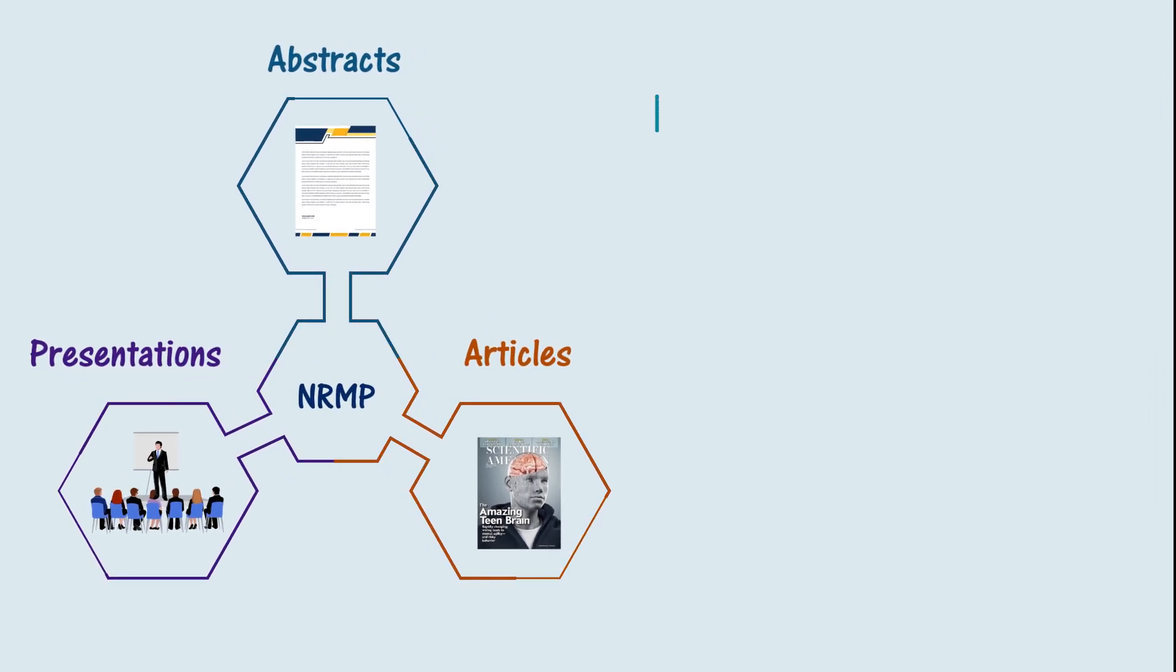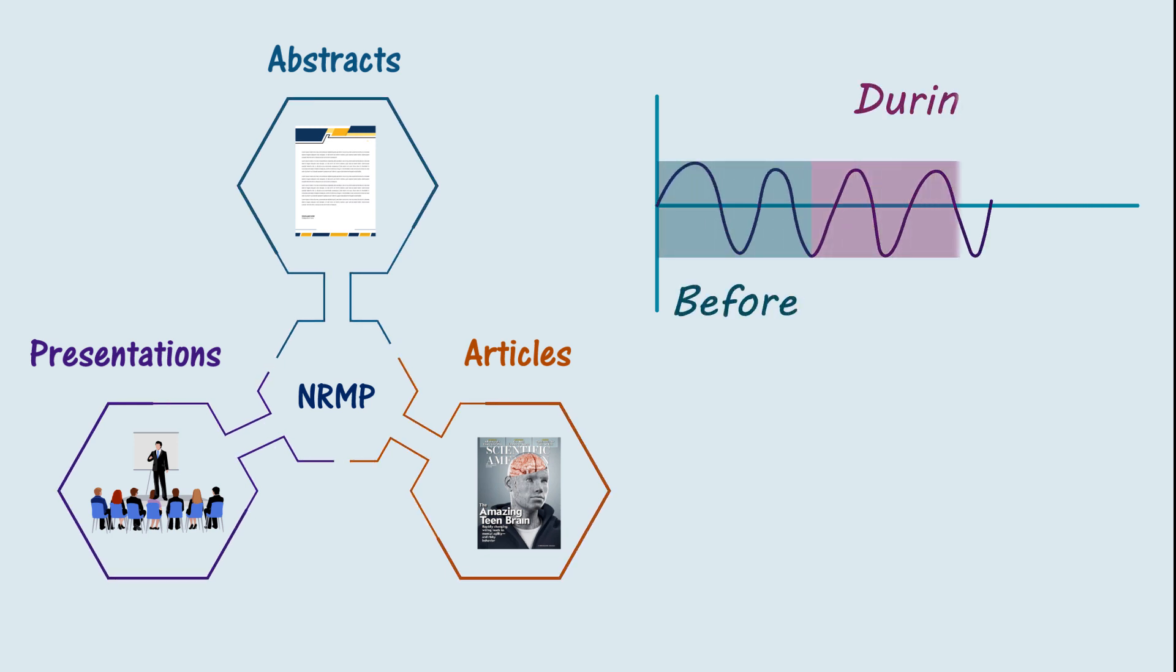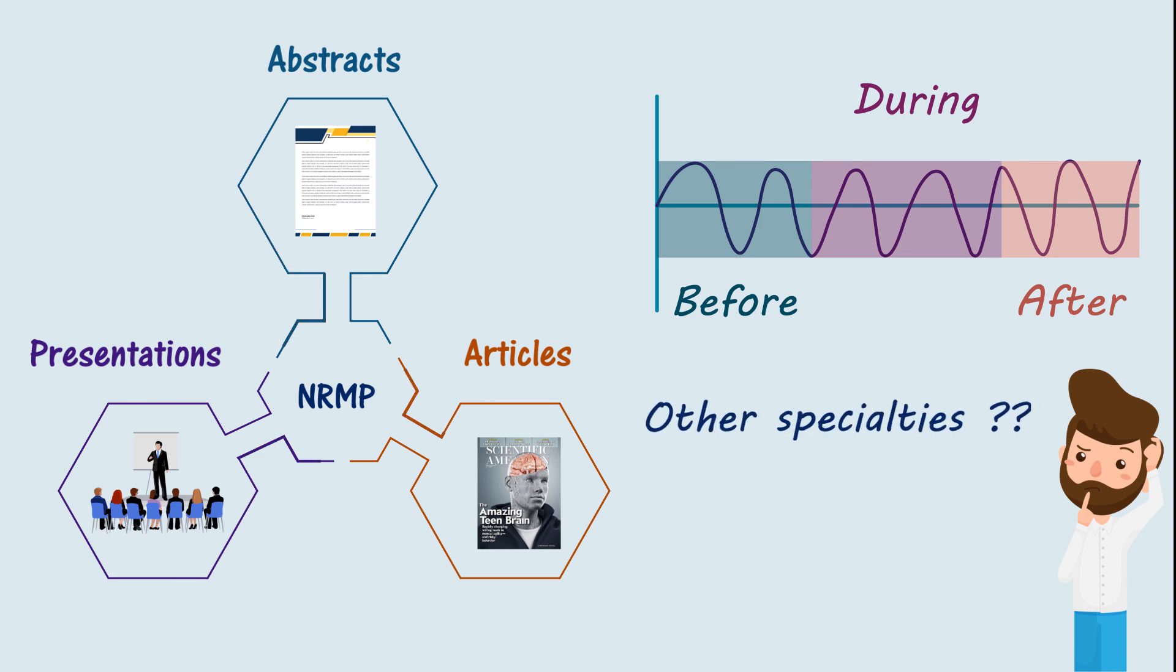Moreover, these numbers reflect the total number of research output applicants have when they apply, which might have been done before, during, or after medical school, without spending dedicated research time. These publications might be from specialties other than the one you're applying for, which might not be as helpful as doing research in that same specialty. So the question is, should I take dedicated research time prior to applying to general surgery as an IMG?